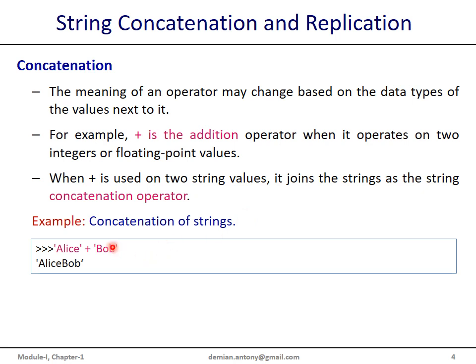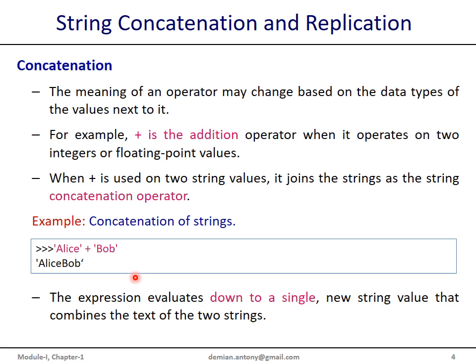Let us take one example. We have a string 'Alice' and the second operand is 'Bob', and we have used the operator plus. Here, the operator plus acts as a concatenation operator, not as an addition operator, because the operands are of type strings. This results in a concatenation of two strings. This expression evaluates down to a single value — a new string which is a combination of the two strings found in the expression.